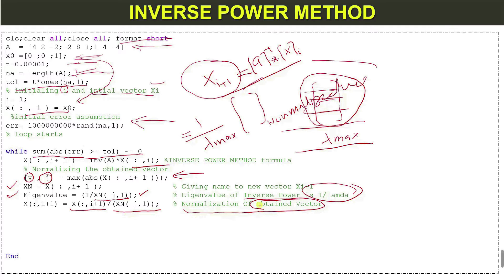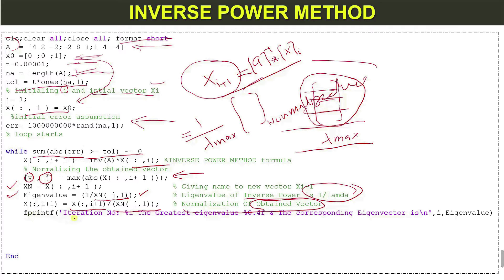We display the largest eigenvalue of the inverse matrix, which corresponds to the smallest eigenvalue of matrix A. Using the fprintf command, we print the number of iterations, the largest eigenvalue of A, and the corresponding eigenvector x(i+1).